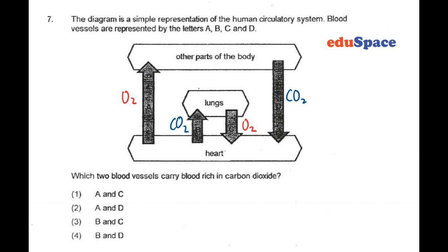And from the heart flowing to the other parts of the body, it is still rich in oxygen. However, after it flows out from the other parts of the body, it should have a lot of carbon dioxide.